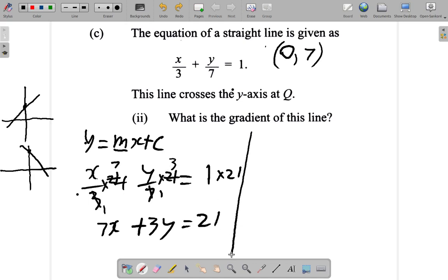I'm going to draw a line here to separate the work. So then I could subtract 7x from both sides. So if I'm minus 7x, 7x minus itself is gone and I only have 3y left on the left. Equal, I subtract 7x from the right-hand side and I have 21 minus 7x.